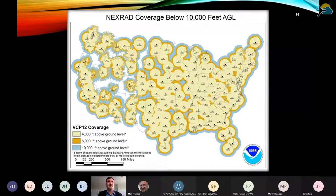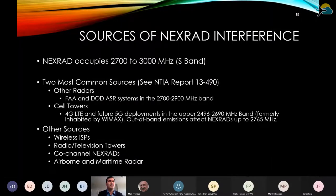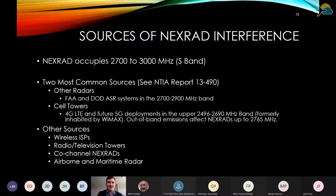Briefly on NEXRAD — this is our NEXRAD coverage. There are also terminal Doppler radars in major cities. NEXRAD operates at 2.7 to 3 GHz, known as the S-band. The two most common sources of NEXRAD interference come from FAA or DOD ASR systems in a similar band, or from cell towers — 4G LTE and future 5G deployments. Wireless signals don't often stop right at the edge of their allocation. There are also other sources including other radars, television towers, and wireless internet service providers.